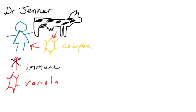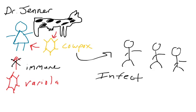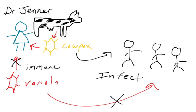So what did Jenner do? He took cowpox, isolated it from cows, and infected people with it. He then exposed these people to smallpox — which sounds very unethical, but it worked. These individuals were protected from variola infection. He had established the notion that you can inject something into individuals — something that's not even the same virus — and give them protection.